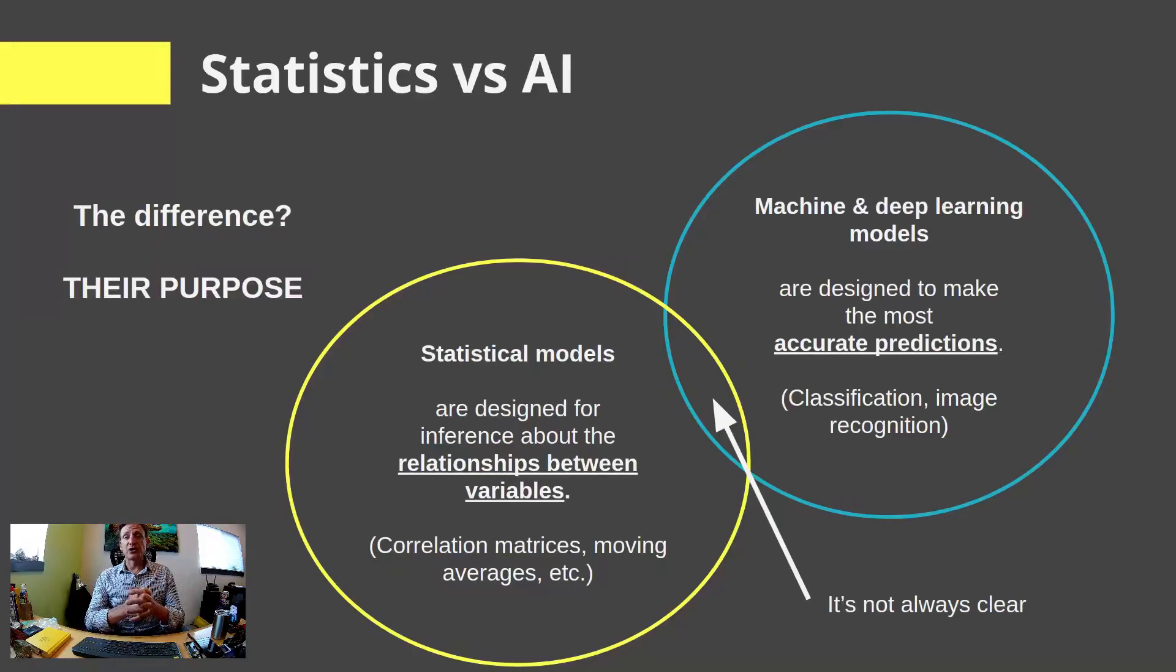Whereas machine and deep learning models are about using that data to form predictions that can be tested. So classifying complex data, data where we may not be able to see it with the human eye, or relationships that we can't pick out without pretty intense, repetitive statistic analyses, we might shove into the machine learning or the deep learning bin. And it's not always clear. They very much overlap.